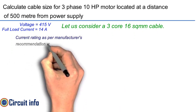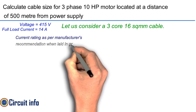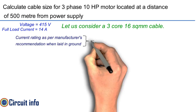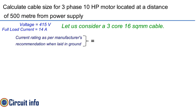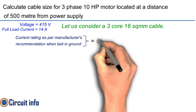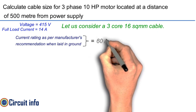Current rating as per manufacturer recommendation when laid in ground: 60 ampere. Resistance of cable: 2.3 ohms per kilometer.